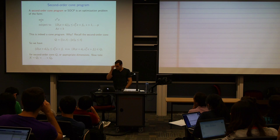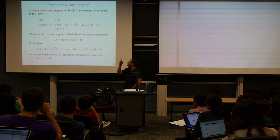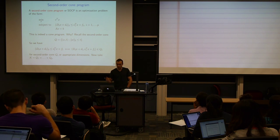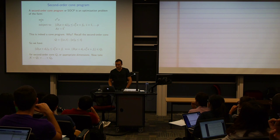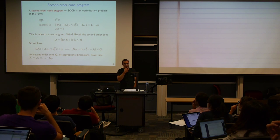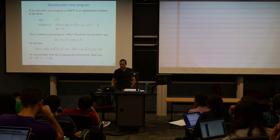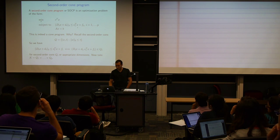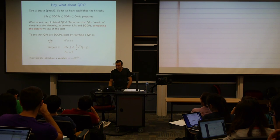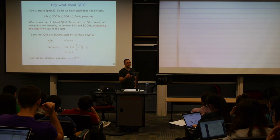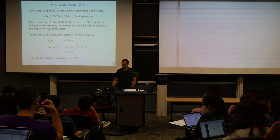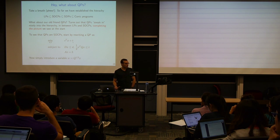An SOCP is a problem of this form: you have a linear criterion and you have second-order cone constraints as well as equality constraints. The D_i (capital) and d_i (lowercase) are given matrices and vectors respectively. e_i is a given vector — not necessarily the canonical basis vector — and f_i is a given scalar. The constraints are of this form. A QP is a special case of that, which completes the hierarchy we drew at the start.